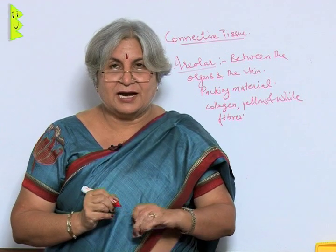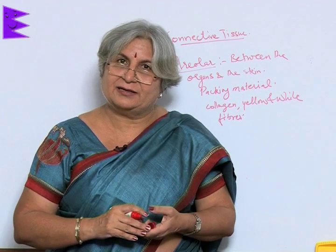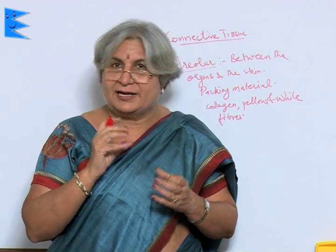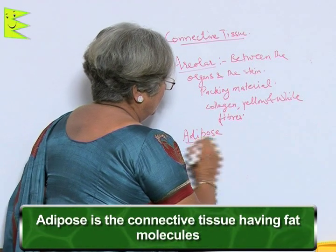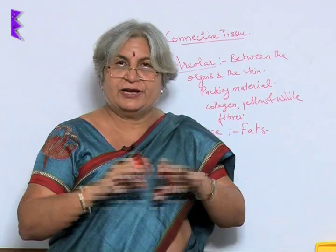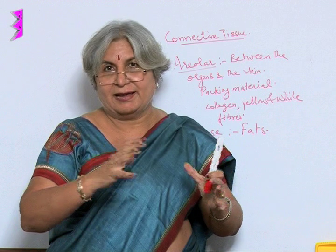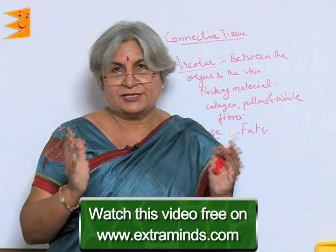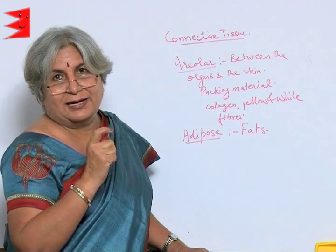Our body also has fat, which is present as a layer below the skin. The connective tissue that contains fat molecules is called adipose tissue. These are the different types of connective tissue that help in connecting body parts and in protection — for example, WBCs in blood protect us, and areolar tissue packages our organs. The main function of connective tissue is to connect body parts, and blood and lymph are also able to transport material.